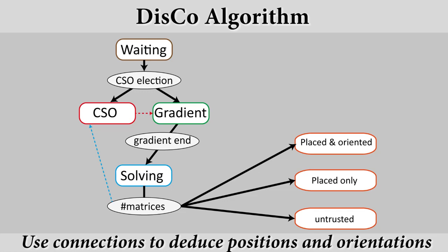During the solving step, each time a module reduces its number of matrices, it sends this update to its neighbors in order to step by step reduce the number of matrices of all robots.